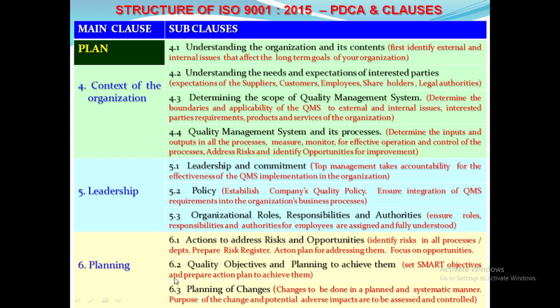The next main clause is Planning. Sub-clause 6.1: identify risk and opportunities in all processes and departments and take necessary action to rectify risk and focus on opportunities for improvements. Evaluate for the effectiveness of the current actions taken and document all risk and opportunities in the risk register for follow-up. Sub-clause 6.2 deals with formulating quality objectives which should be SMART — Specific, Measurable, Achievable, Realistic and Time-bound. Every department should have their own process parameters and quality targets, with action plans to achieve department targets and company quality objectives. Sub-clause 6.3 deals with changes made in the process, products and services, and assessing potential consequences or adverse impacts on environment, pollution, legal requirements, health and safety of man and machine.